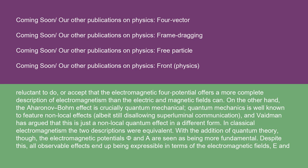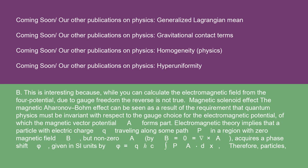On the other hand, the Aharonov-Bohm effect is crucially quantum mechanical. Quantum mechanics is well known to feature non-local effects, albeit still disallowing superluminal communication, and Vaidman has argued that this is just a non-local quantum effect in a different form. In classical electromagnetism, the two descriptions were equivalent. With the addition of quantum theory, though, the electromagnetic potentials Φ and A are seen as being more fundamental. Despite this, all observable effects end up being expressible in terms of the electromagnetic fields E and B. This is interesting because, while you can calculate the electromagnetic field from the four-potential, due to gauge freedom the reverse is not true.